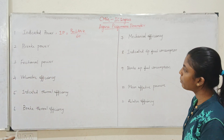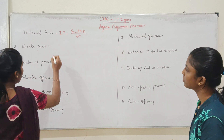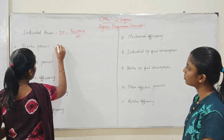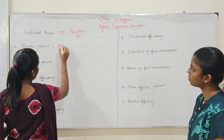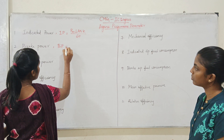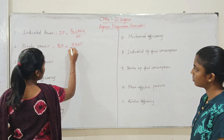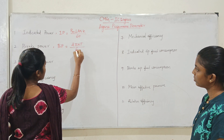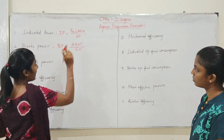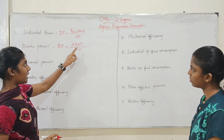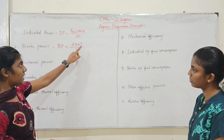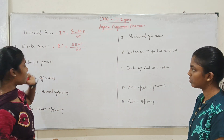Next, Brake Power. Brake power, denoted as BP, is equal to 2π NT divided by 60. N is the speed of the engine crankshaft and T is the torque.